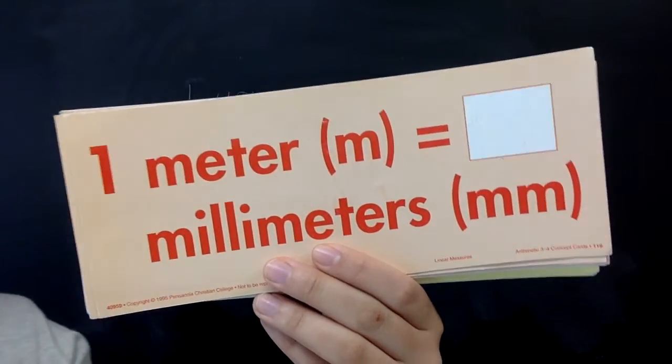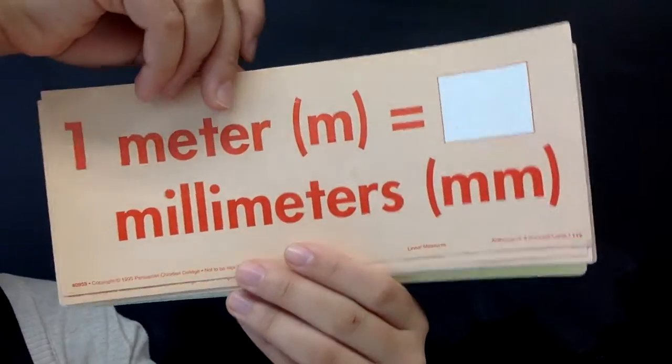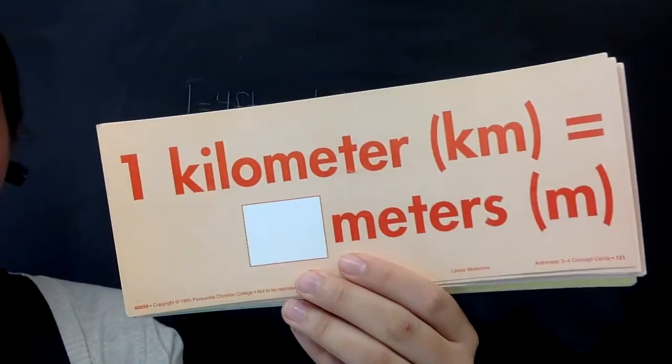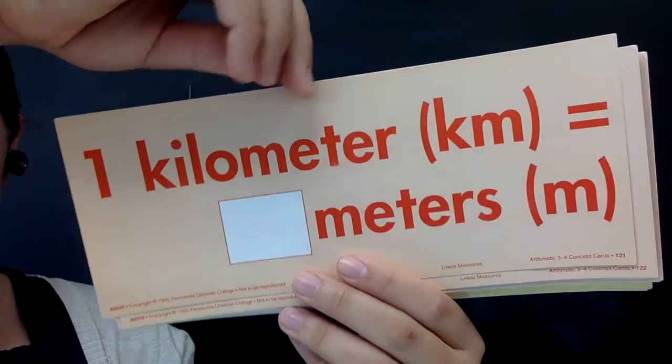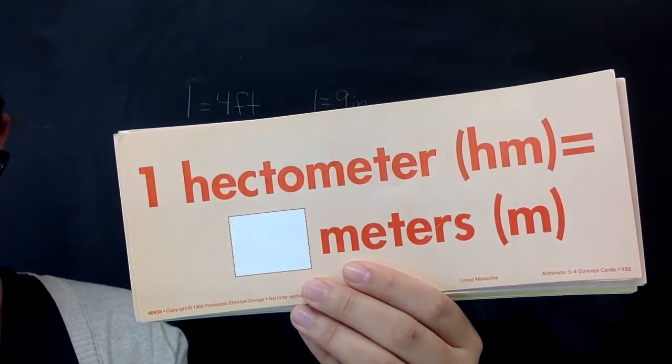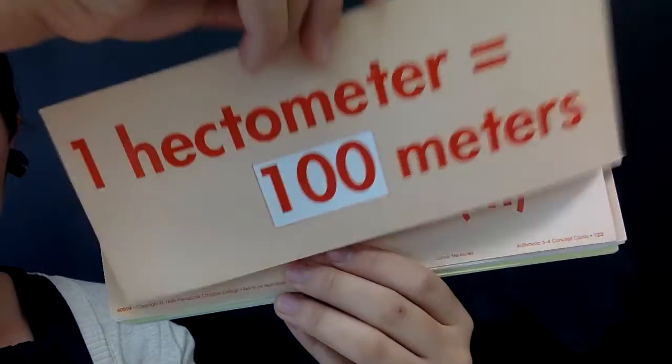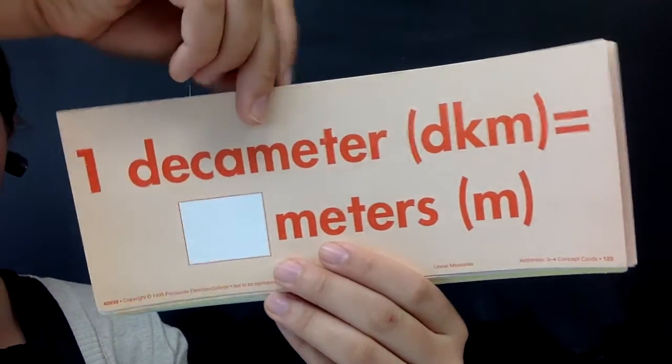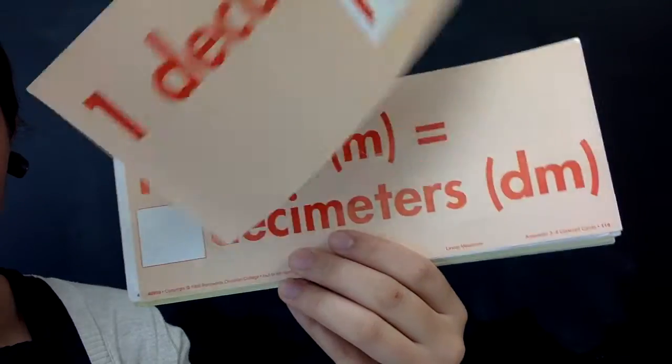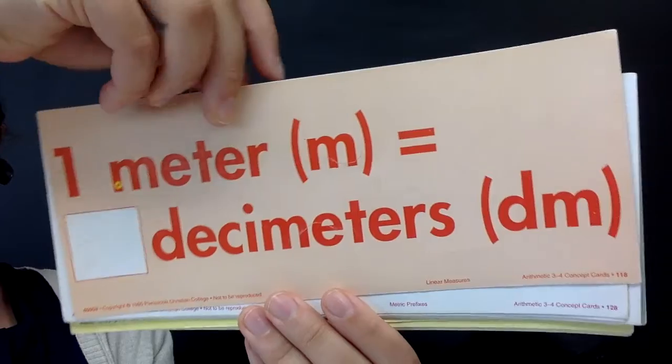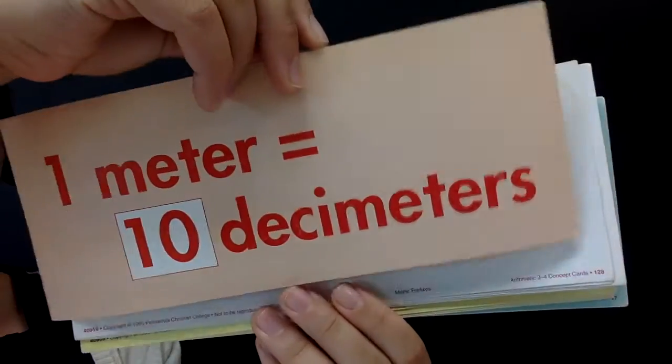One meter equals how many millimeters? One thousand. One kilometer equals how many meters? One thousand. One hectometer equals how many meters? One hundred. One decameter equals how many meters? 10. One meter equals how many decimeters? 10.